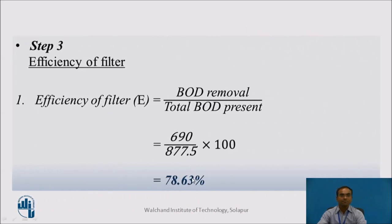Step 3: Calculate filter efficiency. Efficiency E = (BOD removed / BOD applied to filter) × 100 = (690 / 877.5) × 100 = 78.63%.